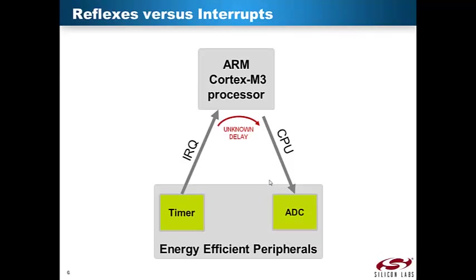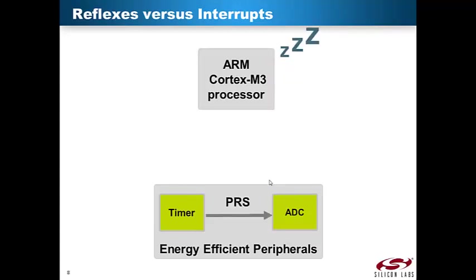It is also important to acknowledge that a large portion of the active mode current consumption is caused by the CPU. When using the Peripheral Reflex System, the timer can be configured to trigger the A-to-D conversion directly. When leaving the CPU out of the control loop, predictable timing is ensured. It also allows the CPU to be put to sleep.